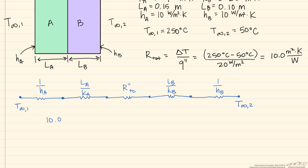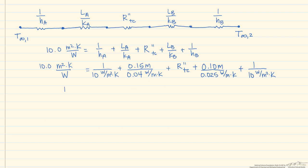Our 10.0 meters squared k per watt is going to equal the sum of these resistances. And we have the information so that we can solve for every single one of these resistances, except for this final thermal contact resistance. And if we do the math, we find that this thermal contact resistance is 2.1 meters squared kelvin per watts.